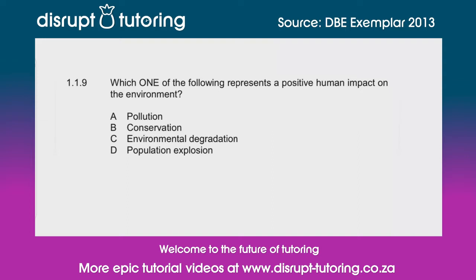So let's jump in. Which one of the following represents a positive human impact on the environment? Is it: A) pollution, B) conservation, C) environmental degradation, or D) population explosion? Let's go through all of these options.